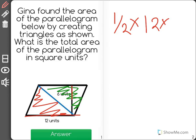and the height is 6 units because it's the same on both sides. For the green triangle, the base is also 12 units because it's a parallelogram, so 1/2 times 12, and the height is 6 units as well.